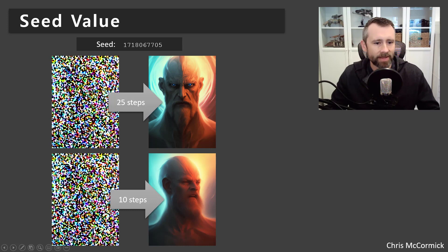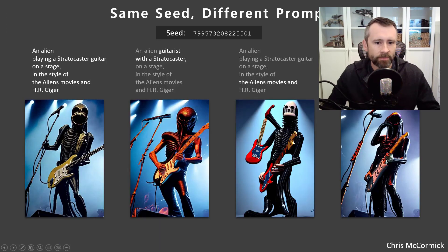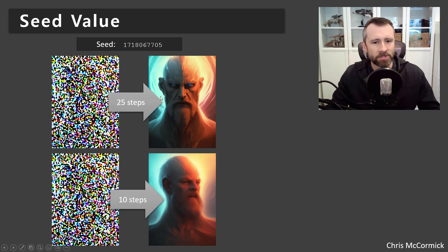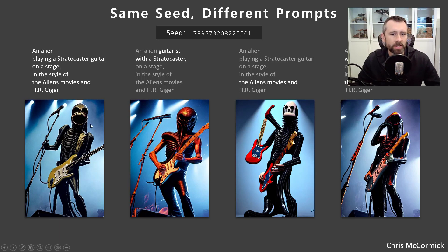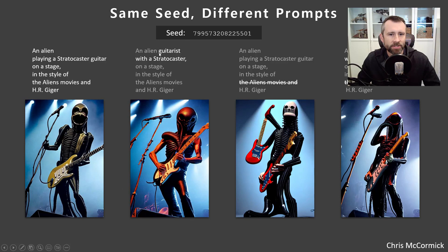These two images are identical and it's just the step count that produced the different results. Here's a slide showing how you can make some subtle changes to the prompt — these are a little less subtle. The most subtle changes come from modifying modifiers, but if you change the subject of the image the change can be more significant. Here's the initial one: an alien playing a guitar. Then if I just reword the prompt a bit — instead of an alien playing a Stratocaster guitar, it's an alien guitarist with a Stratocaster — very similar composition but a pretty different looking alien.